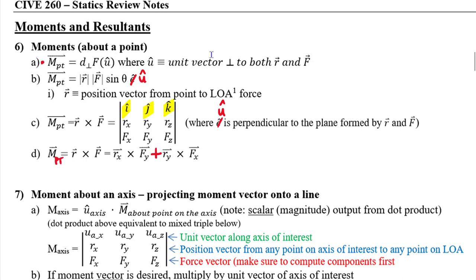All moments are about a point — all subscripts indicate this. The r vector always goes toward the force, away from the point. If you flip the r vector around, you'll get a sign error on every cross product you take. One application of moments is finding not only the moment about a point, but also the moment about a line or axis, which projects the moment onto that line using a combined dot product and cross product.